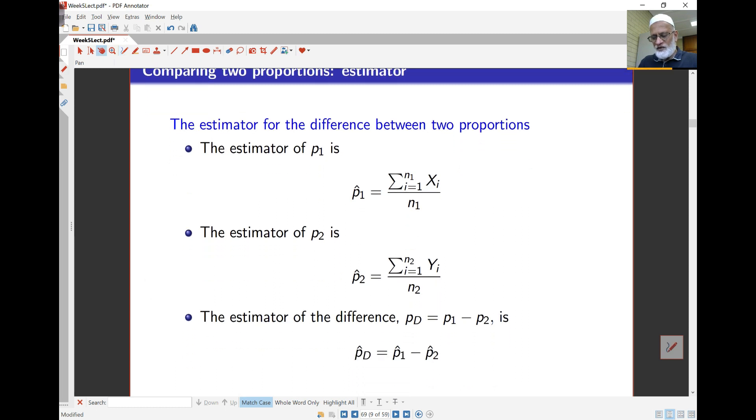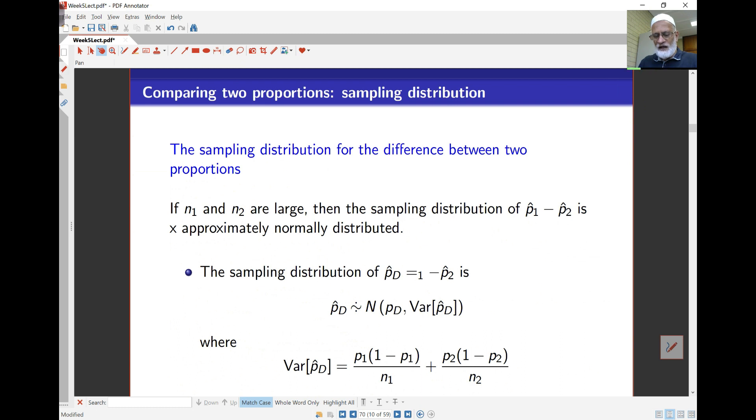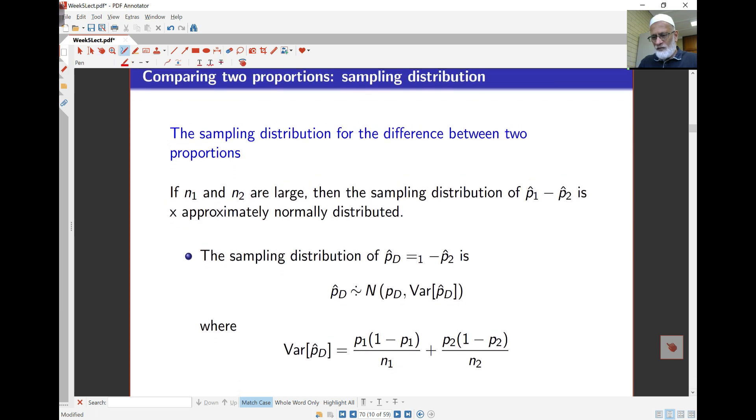The proportion estimator here is the sample proportion which is the sum over n. The sum of the x's gives us the total number of yeses or successes over total sample size. For the second population it's similar. What I'm after here is the difference which is pd = p1 minus p2. This is what I'm going to base my hypothesis on. I need to get its sample distribution. If n1 and n2 are large, each of the p1 hat and the p2 hat will be approximately normal. That means the difference is also normal.